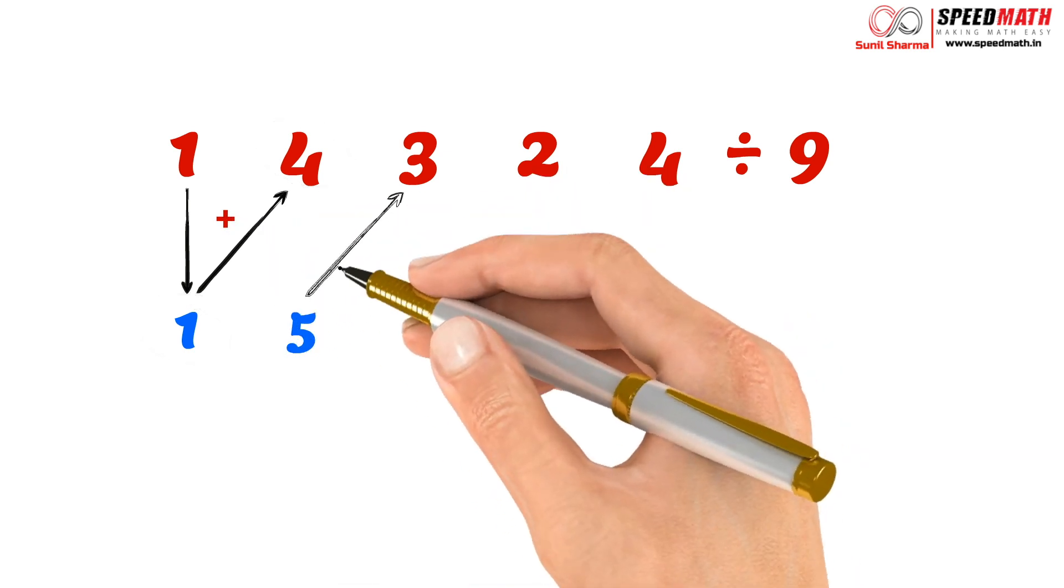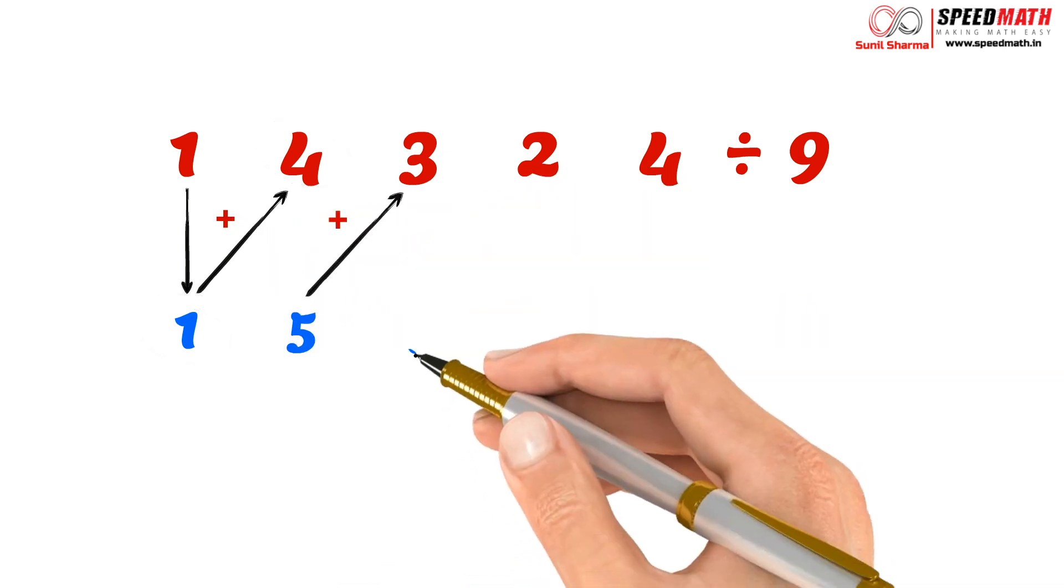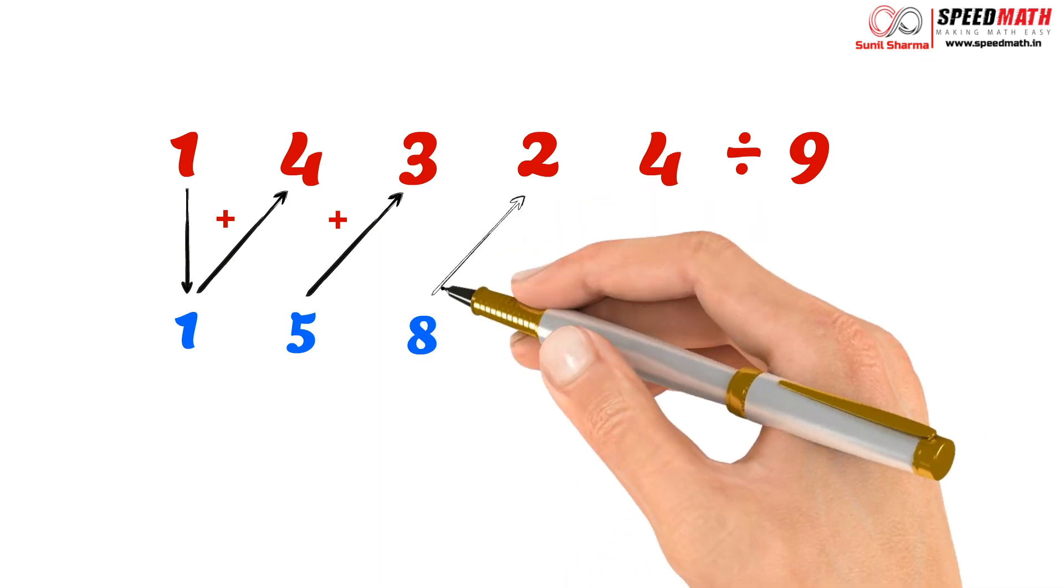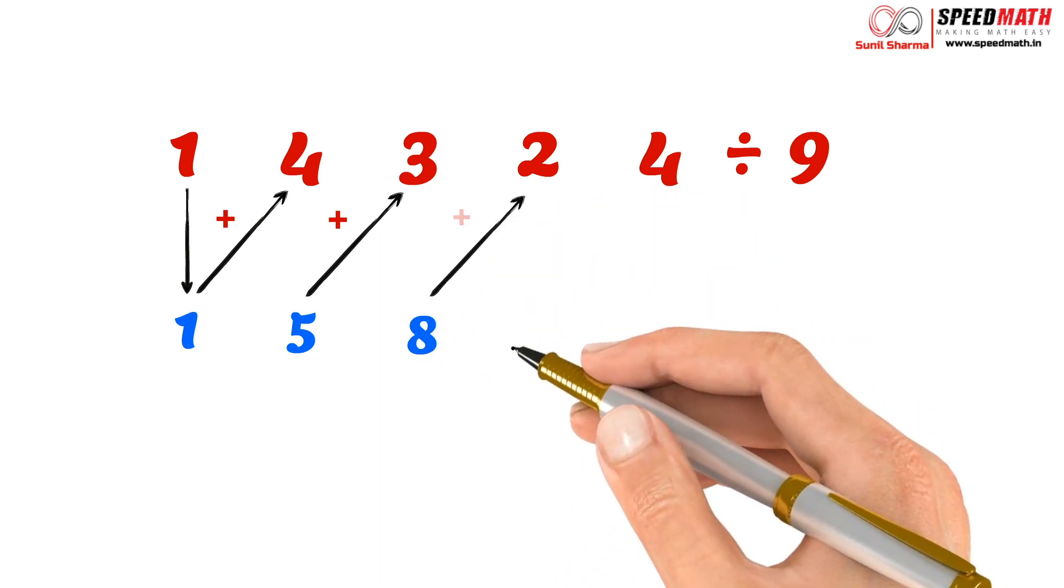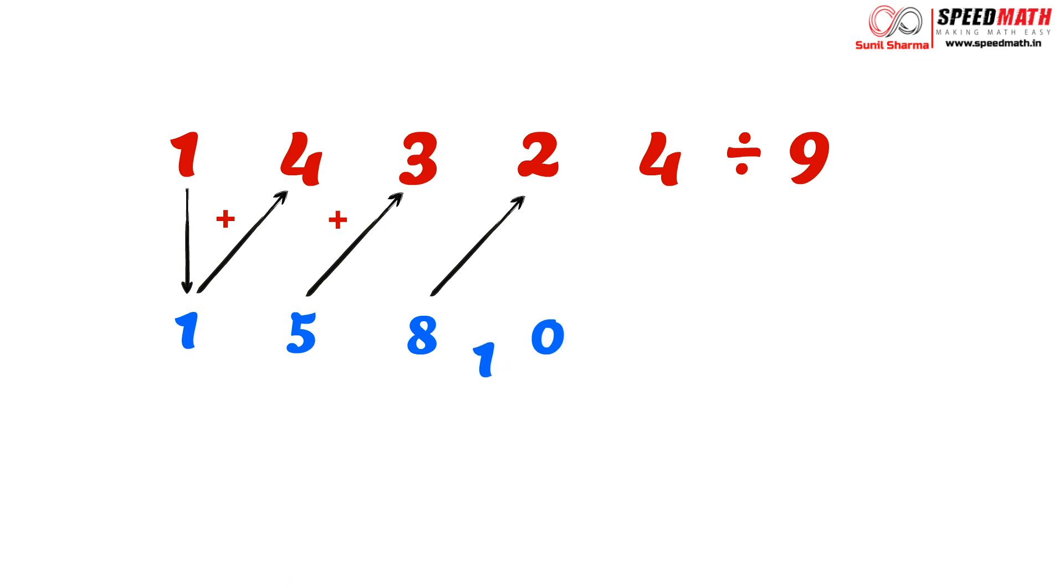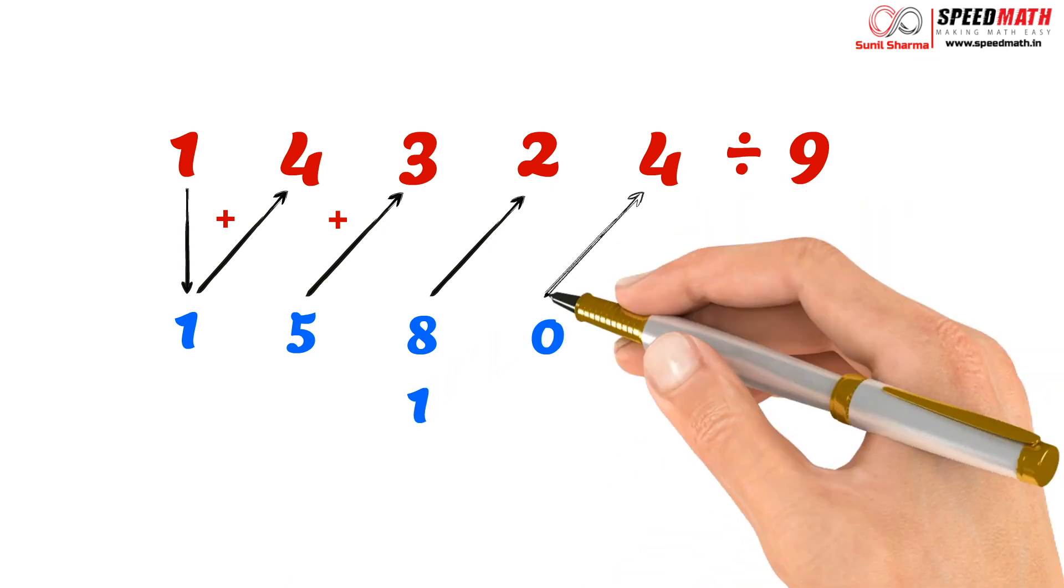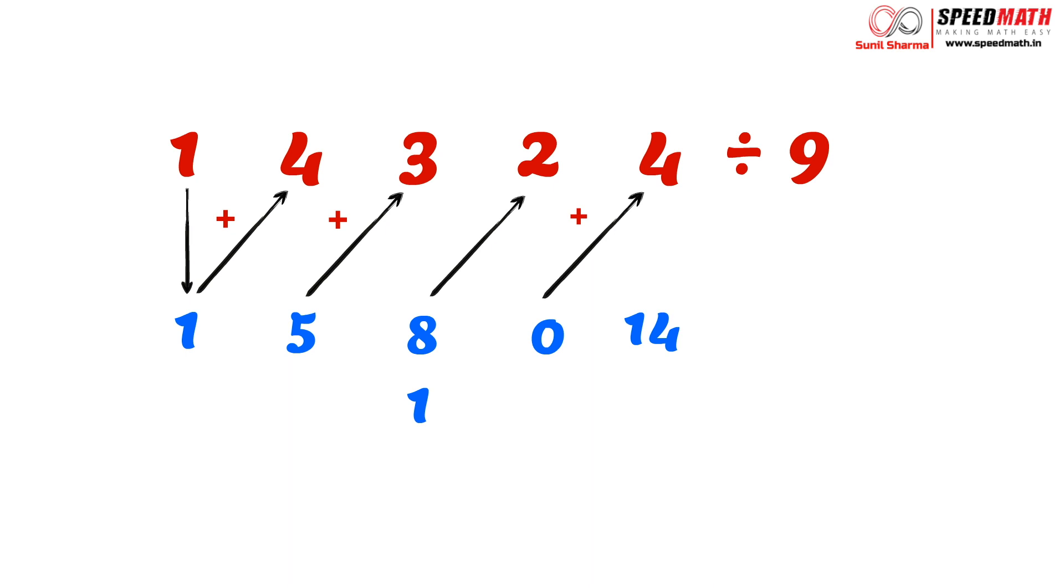8 plus 2 is 10, but wait, 10 here is a double digit and we cannot write double digit here, so we will carry forward this 1 like this. And then 10 plus 4 is 14. So 14 is again greater than the divisor, so as per our rule we are going to remove 9 from it and at the same time add 1 to the previous digit. So 14 minus 9 is 5, so our remainder is 5, and the quotient is 1591.